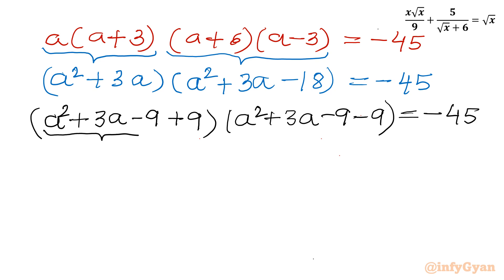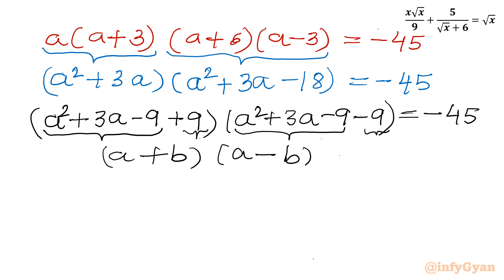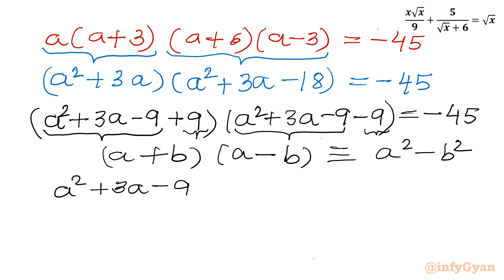Now I will consider the repeated expression (a² plus 3a minus 9) and use the a plus b times a minus b identity, which gives a² minus b². So I can write (a² plus 3a minus 9)² minus 9² equal to negative 45.